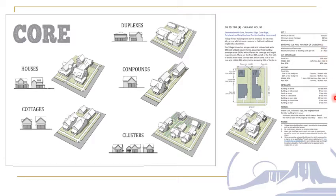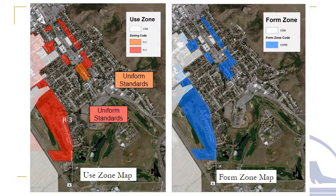This is a basic introduction to form types; additional resources are available on the Guiding Golden page. Each form zone I will discuss has a very specific curated list of form types permitted within its boundaries. The core form types to keep in mind are houses, cottages, duplexes, compounds, and clusters.